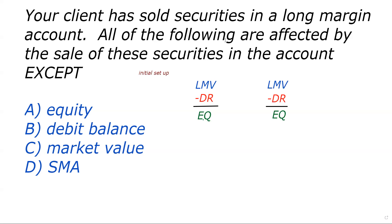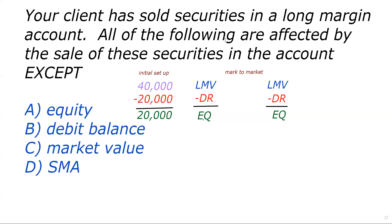So let's say we have a margin account with $40,000 in market value — I just made that up to illustrate this question. And let's assume that it's perfectly balanced: you owe the brokerage firm $20,000, and so you have $20,000 in equity. Now let's assume that we sell securities — we're doing what this question asks. We've done a setup, and now we're going to sell securities and do a mark-to-market.